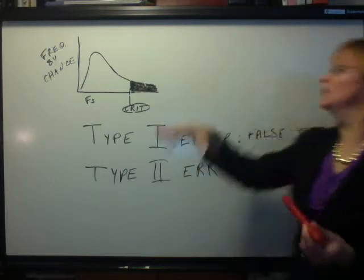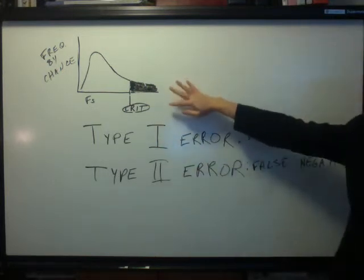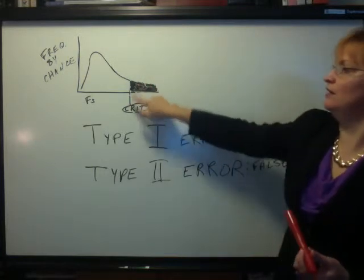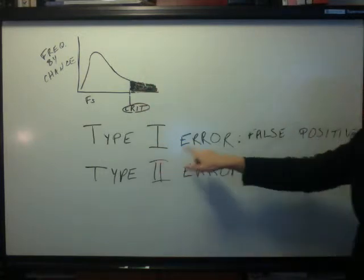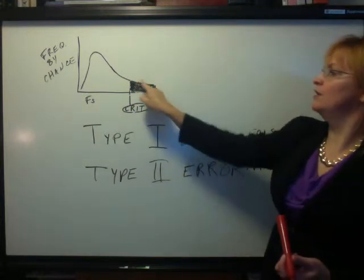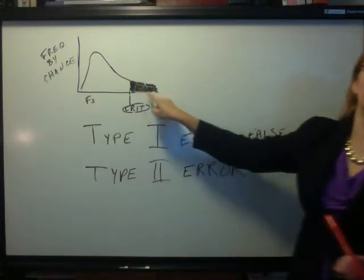So this is a gauge of your chance of being wrong claiming an effect is this percent here and the probability of a Type 1 error is the percent of statistics that naturally fall here with no effect.